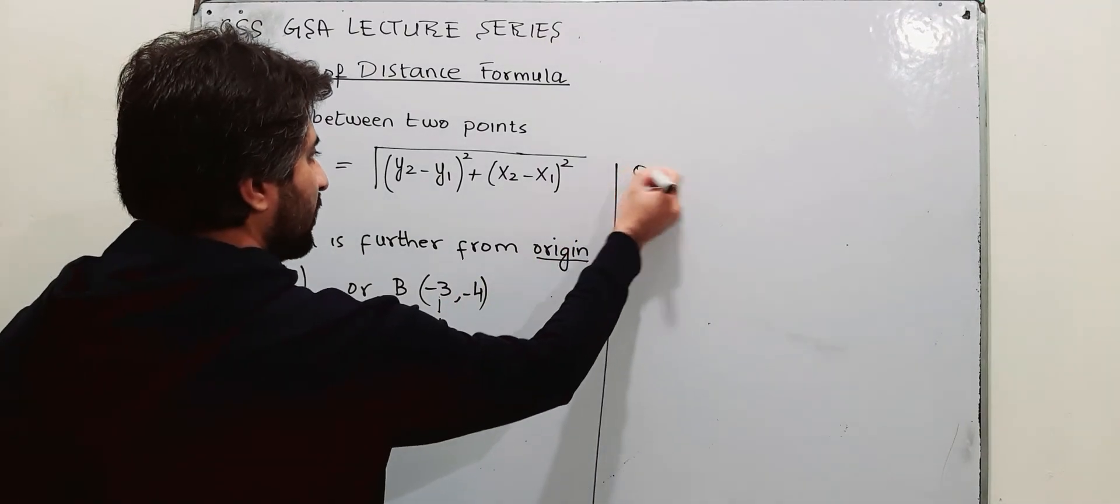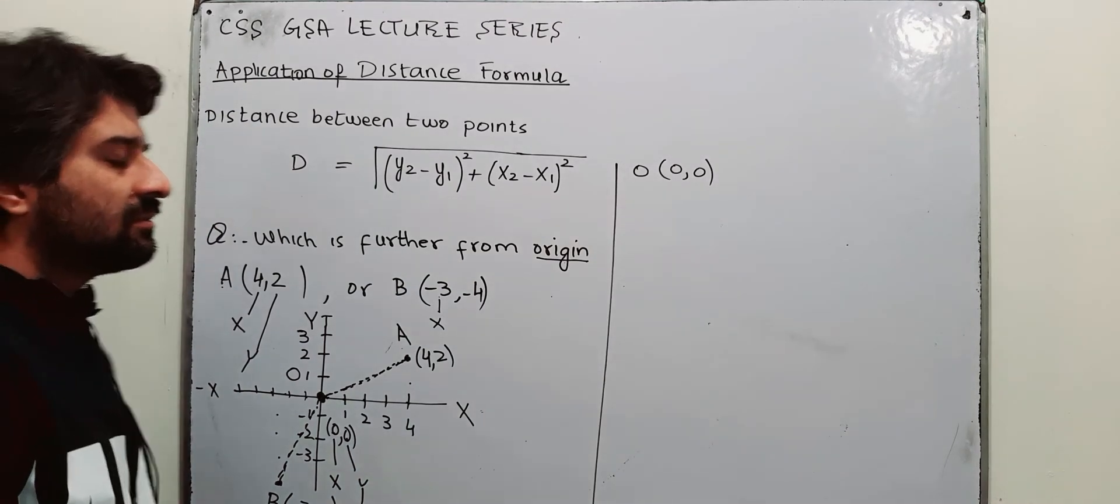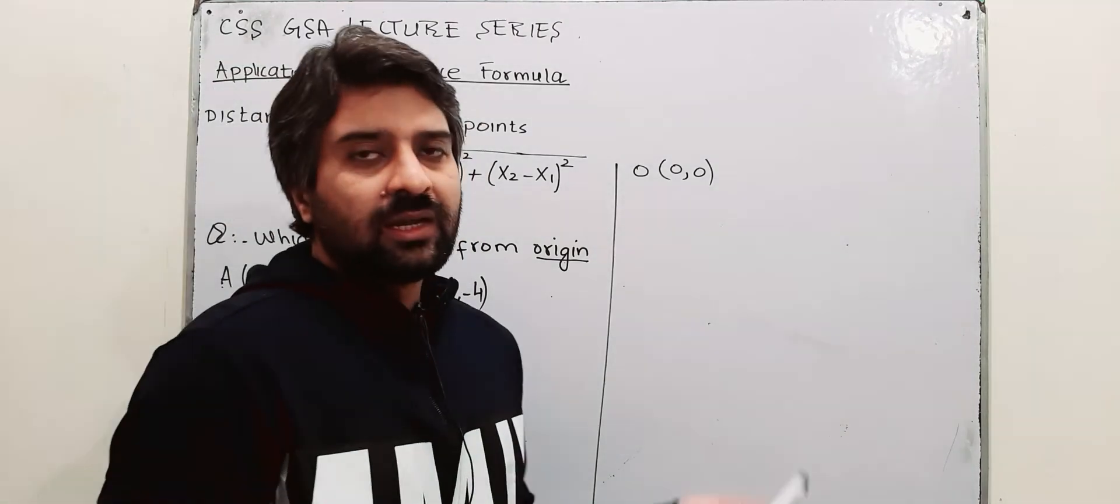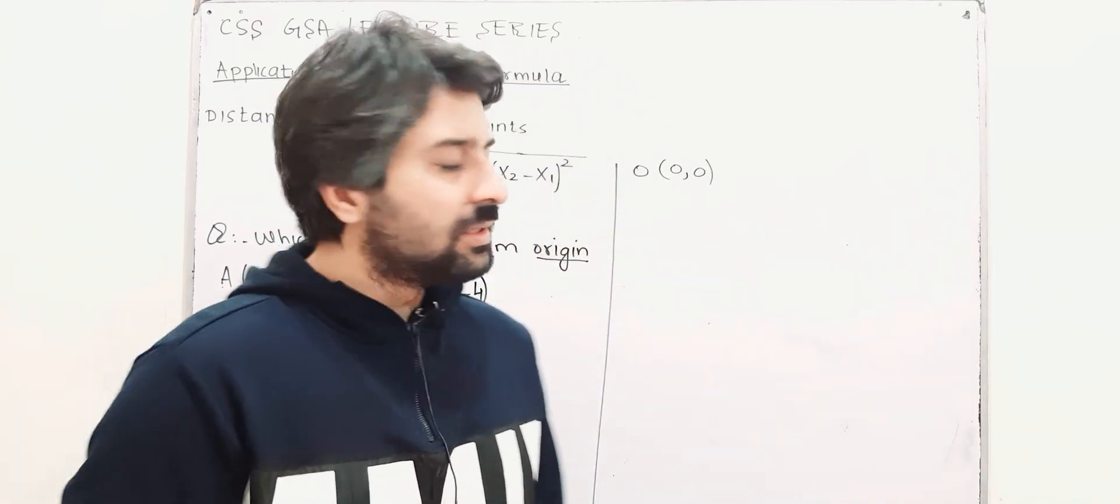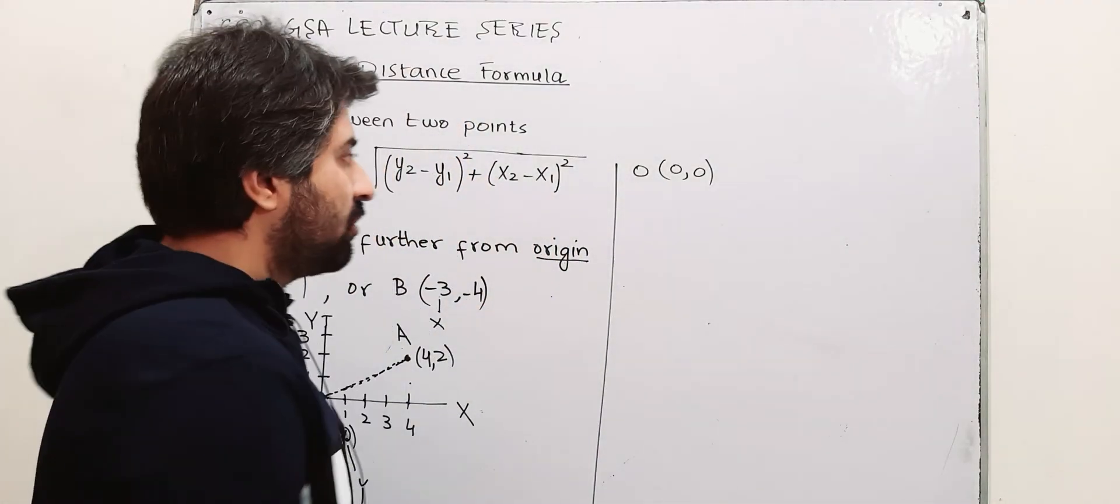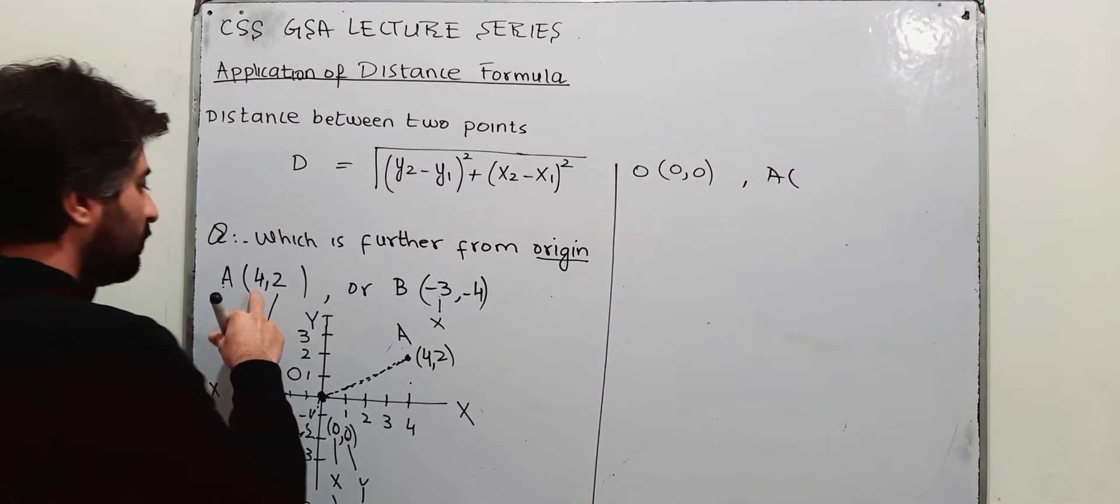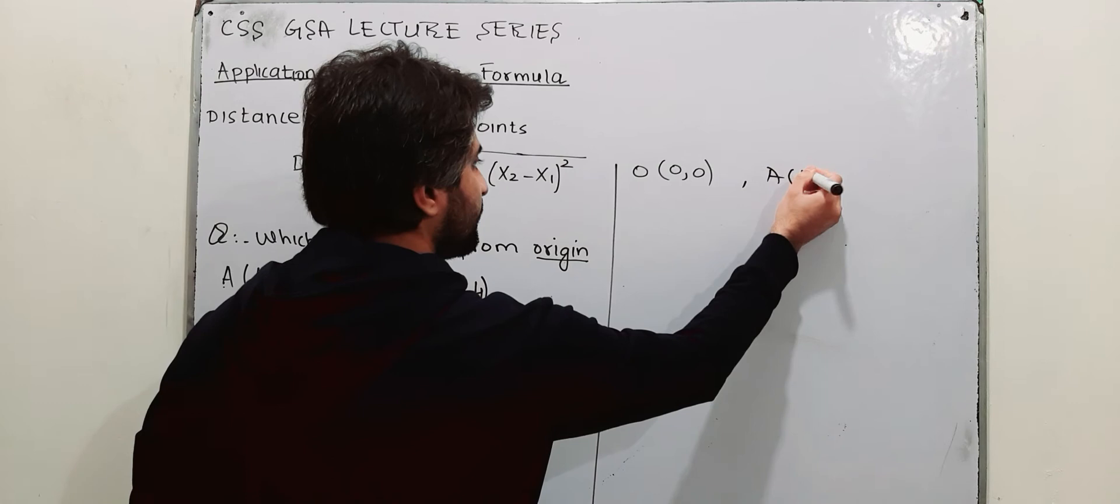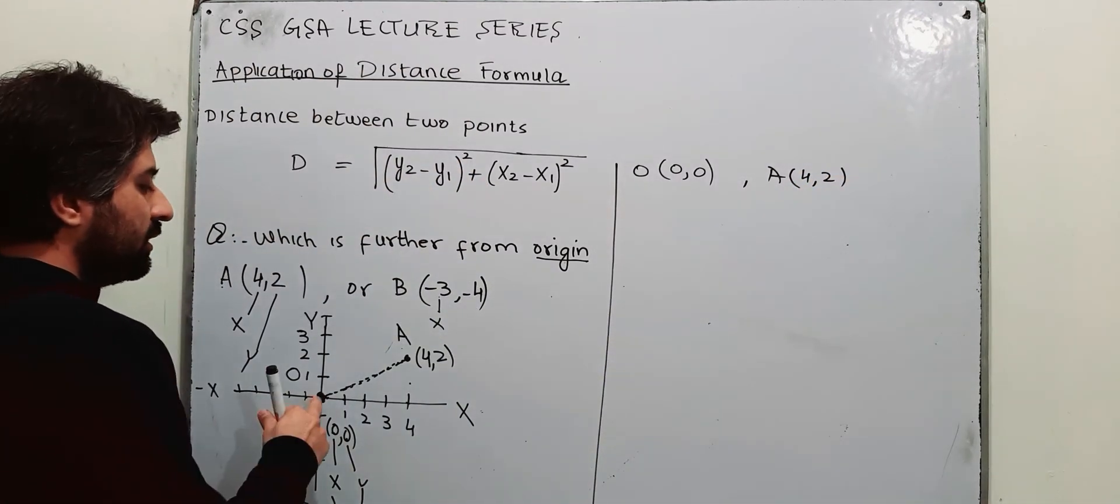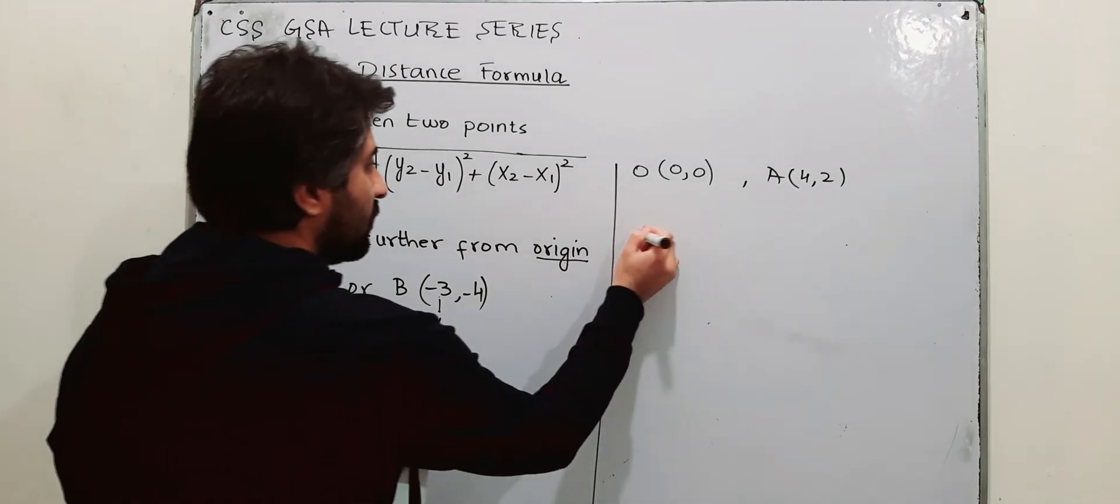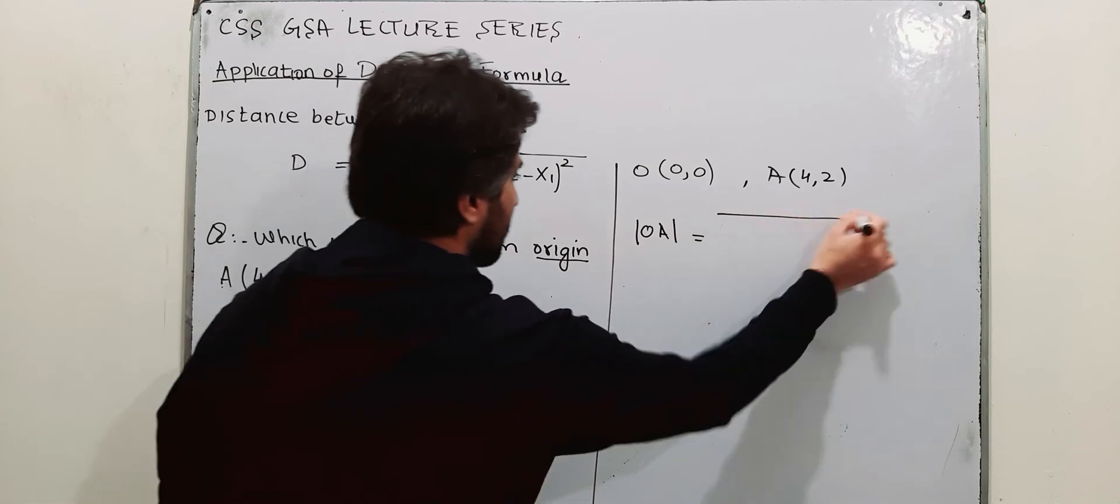Finding OA. The coordinates of origin are (0,0). Means 0 unit in the x axis, 0 unit in the y axis. That means you haven't moved any unit in the x axis or any unit in the y axis, so you are at origin, the starting point. And coordinates of A are given (4,2). I am going to find the distance between these two points. OA with these bars represent the distance or magnitude.